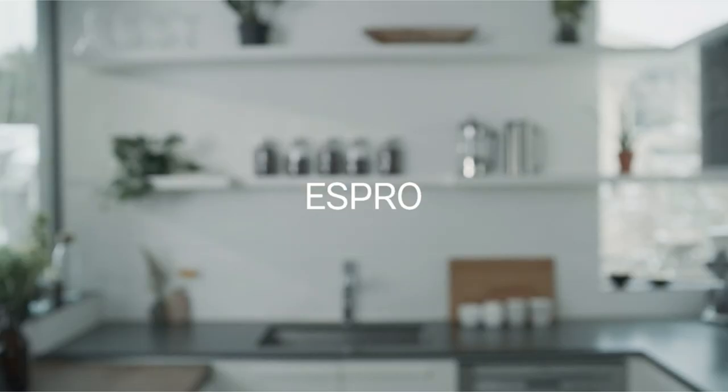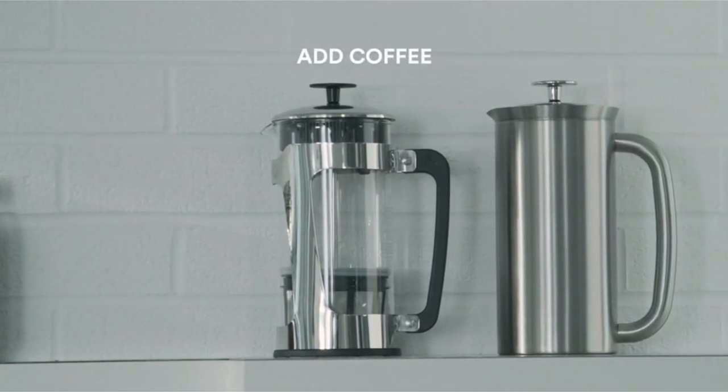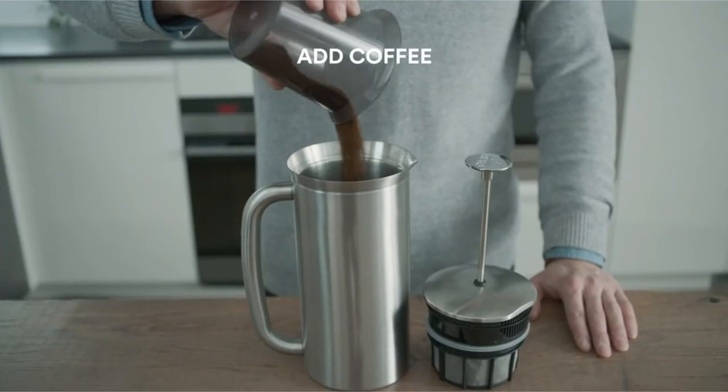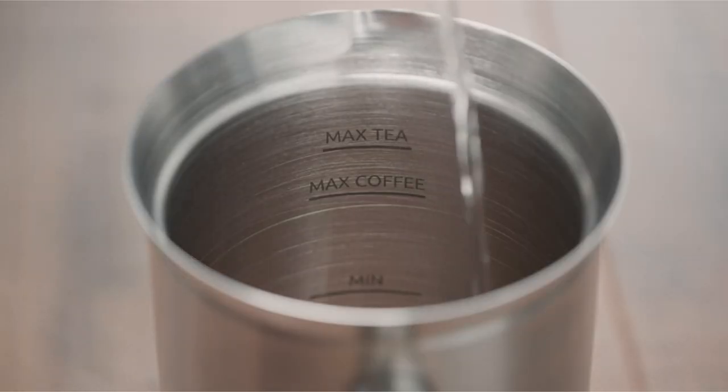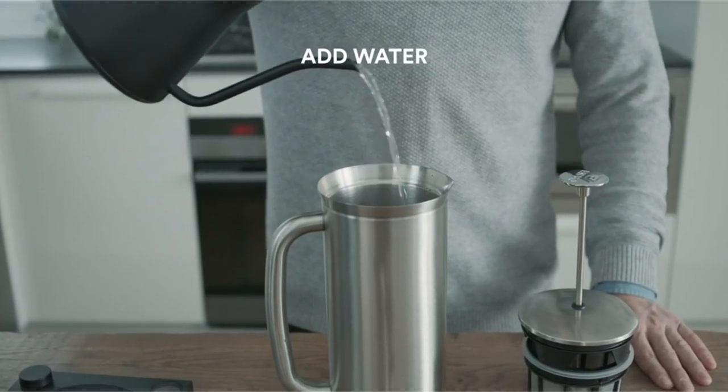To top it off, the P7's revolutionary features, like a silicone lip and twin micromesh filters, prevent bitterness and flavor deterioration, guaranteeing that each cup is as delicious as the first.